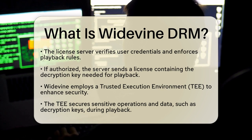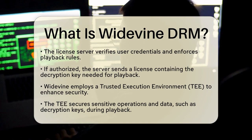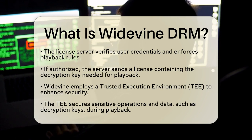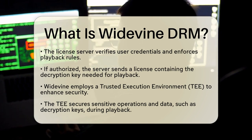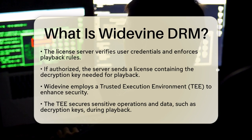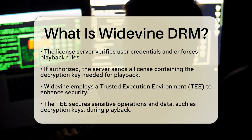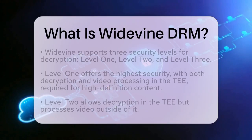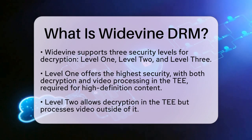Widevine Digital Rights Management supports three levels of security, which dictate how and where decryption occurs. The first level, Level 1, provides the highest security. Both decryption and video processing happen entirely within the Trusted Execution Environment. This level is necessary for playing high-definition content.